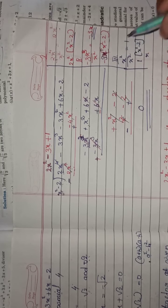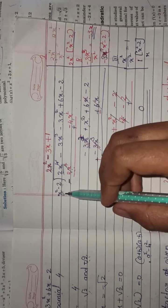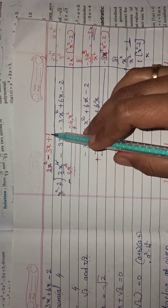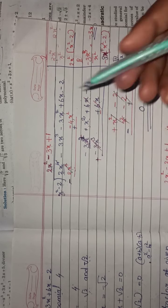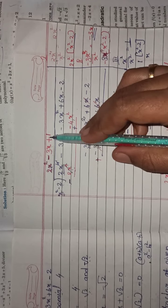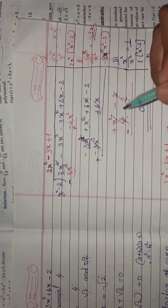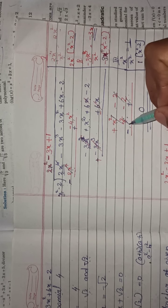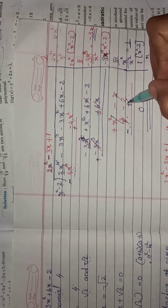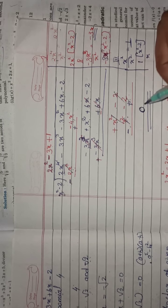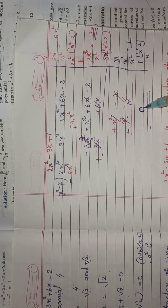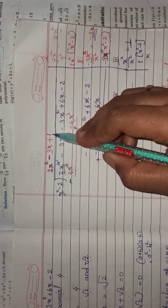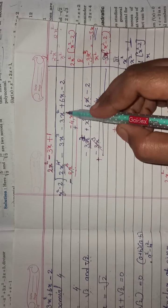Third step: x squared divided by x squared equals 1. So we write 1 here. Then, 1 into x squared equals x squared. Then, 1 into minus 2 equals minus 2. Here, plus x squared and minus x squared cancel. And minus 2 plus 2 also cancel. Therefore, we get remainder equal to 0. So, 2x squared minus 3x plus 1 is another factor of the polynomial.